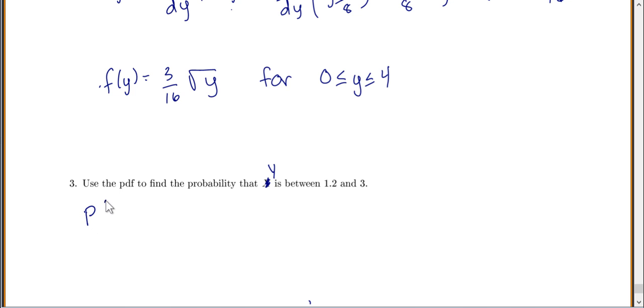So the probability that y is between 1.2 and 3 is going to be equal to the integral from 1.2 to 3 of our PDF. Now, in this case, our PDF is 3 out of 16 times the square root of y, dy.